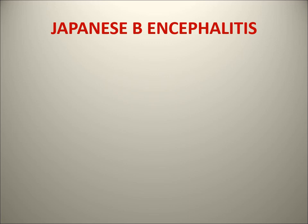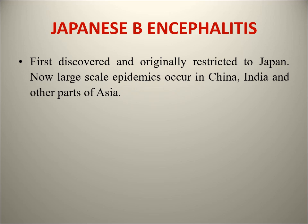Now, Japanese B Encephalitis virus. This is the leading cause of viral encephalitis in Asia, including India. It is named 'Japanese' because this virus was first detected in Japan, where summer encephalitis was very common. It was called Japanese B encephalitis to differentiate it. Due to extensive vaccination, it is no longer so common in Japan - they have controlled it. It was first discovered restricted to Japan.